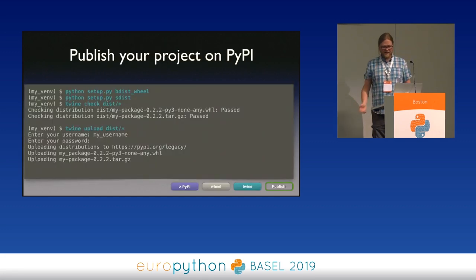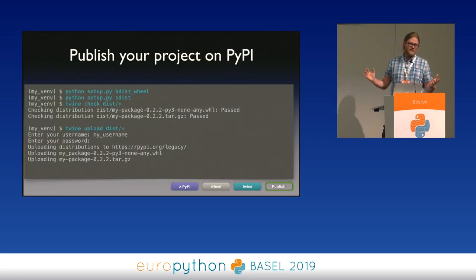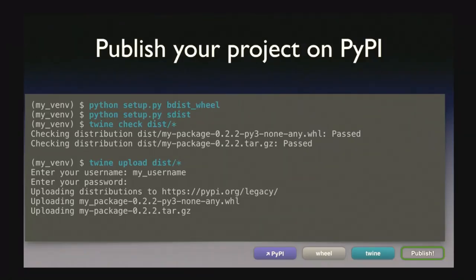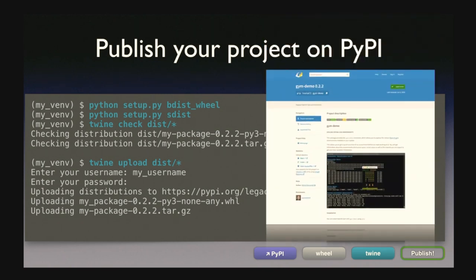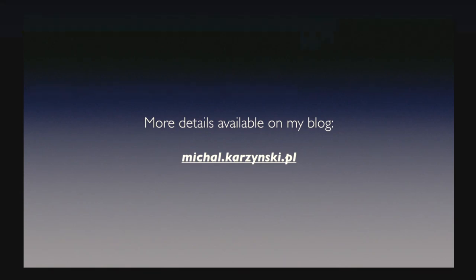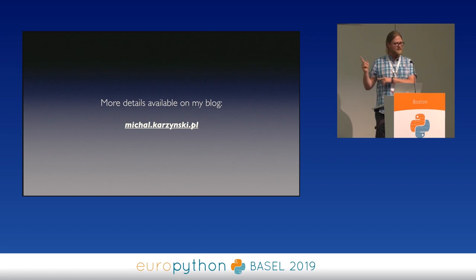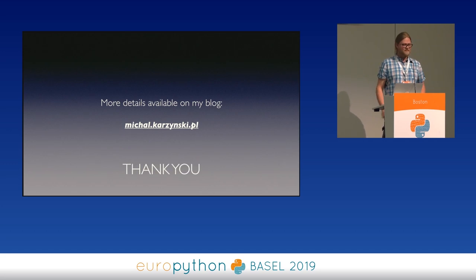So I'm getting to the end of my story. Now you're ready to publish your project on PyPI. This is very easy — we have a tool called Twine, and once your packages are built you can upload them with Twine. You just need to set up an account on PyPI and your package is published. I wrote up all the details — I know this went fast, but everything that I said is in an article on my blog so you can read it at your own pace. And with that, thank you very much.